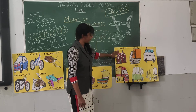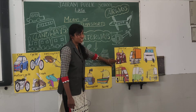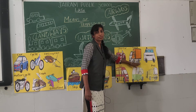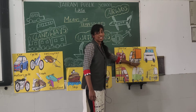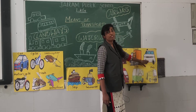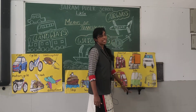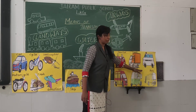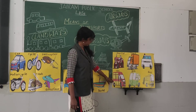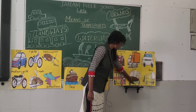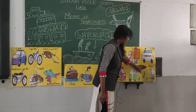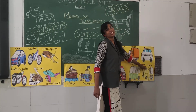What do you see here, children? This is a tractor. What vehicle is this, children? This is a truck. What vehicle is this? Have you seen this? This is an ambulance. What vehicle is this? This is a van. What vehicle is this? This is an auto rickshaw. And this is a bus.